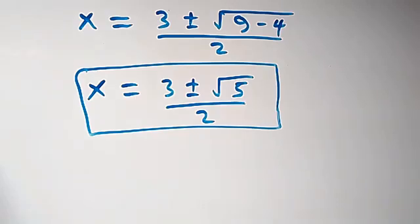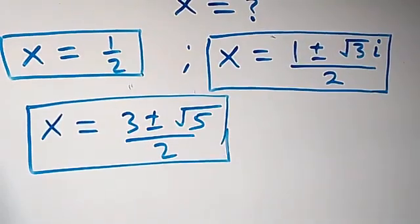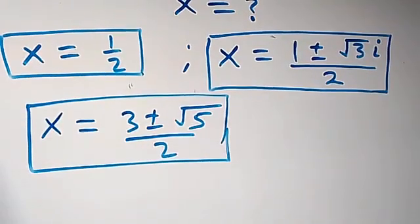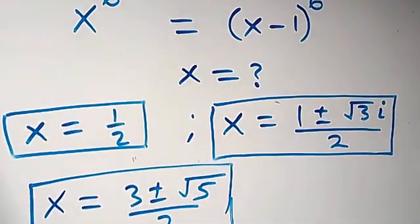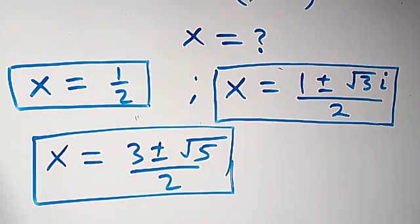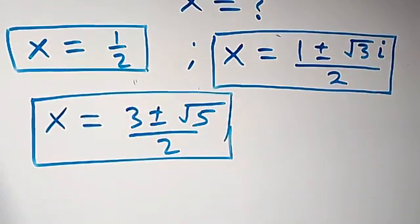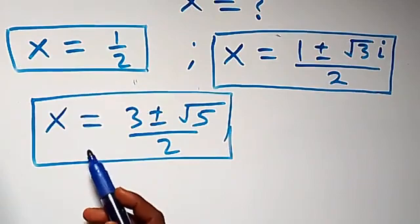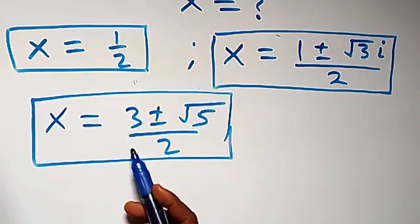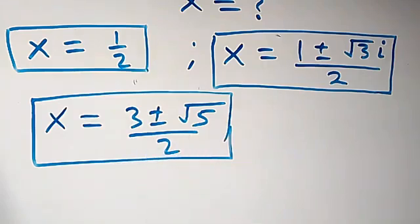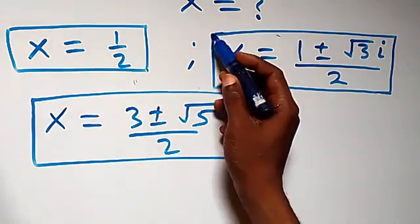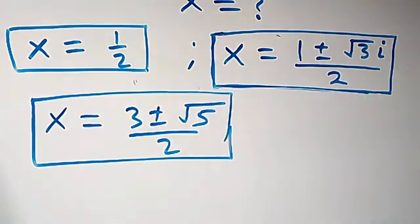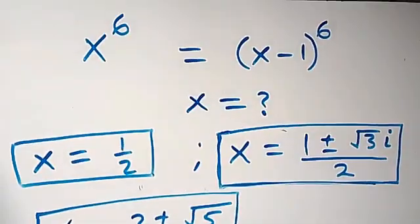Altogether, we have five solutions to this problem. The first is x equals one half. Then two real solutions: x equals three plus root five over two, and x equals three minus root five over two. And two complex solutions: x equals one plus root three i over two, and x equals one minus root three i over two.